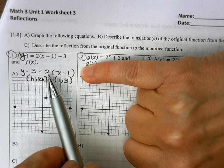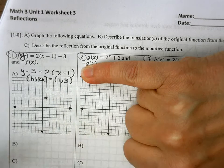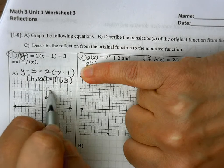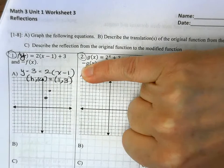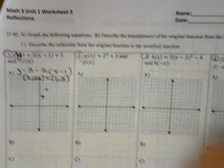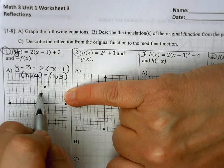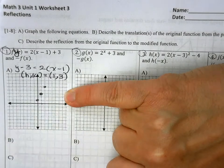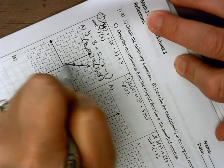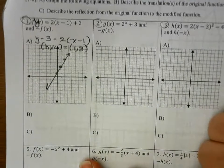My slope or stretch is the number multiplying the x term, which is 2. So I'm going to go up 2, over 1. Two points is enough to graph a line, but for accuracy I'm also going to do the double reflection point, going down 2, left 1, to get a straight line. Okay, so there is f of x.